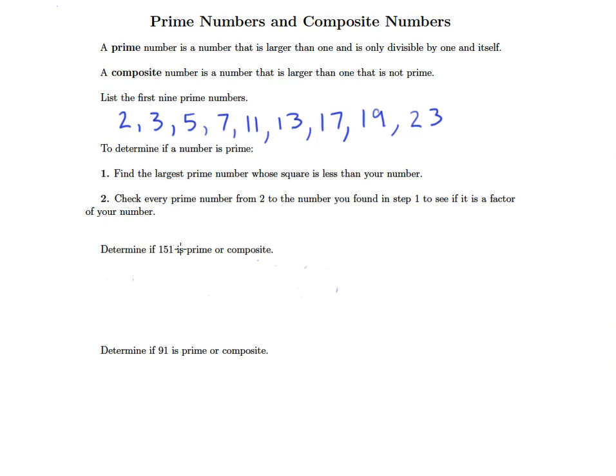Now notice in these next two examples, I ask us to determine if a couple of larger numbers are prime or composite. We probably don't want to just continue this list on and wait till we work our way up to numbers as large as 151 and 91. Here's a two-step process we can take for figuring out if these numbers are prime or not. First, we're going to find the largest prime number whose square is less than your number.